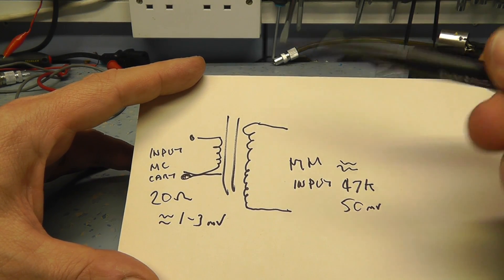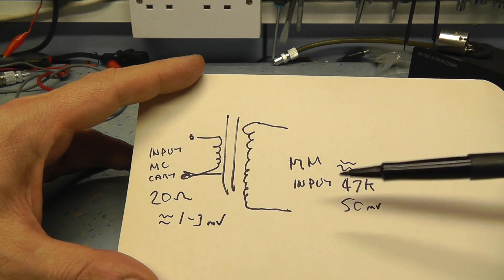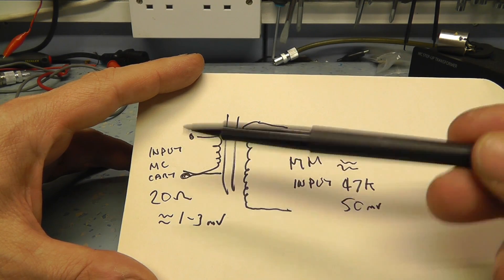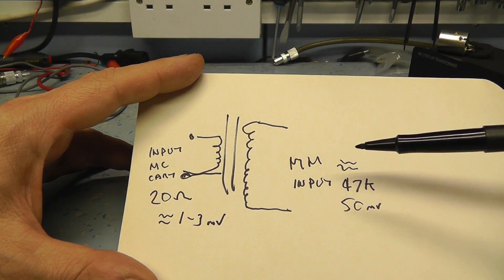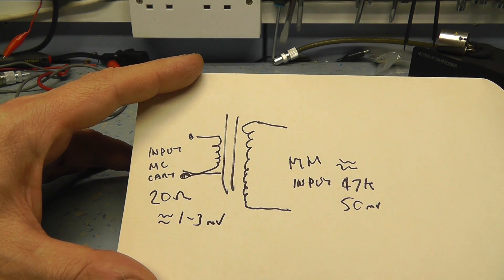So basically that's all it does is it matches the 20 ohms to the 47K and gives you the right level and the right matching. If you try and put a moving coil cartridge on a moving magnet input, the sound is very, very quiet and you'll hardly be able to hear anything. And it buggers up all the matching as well.